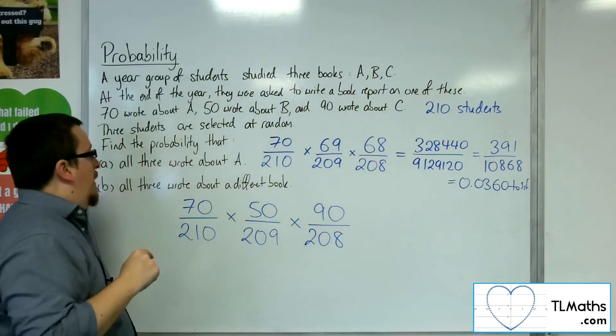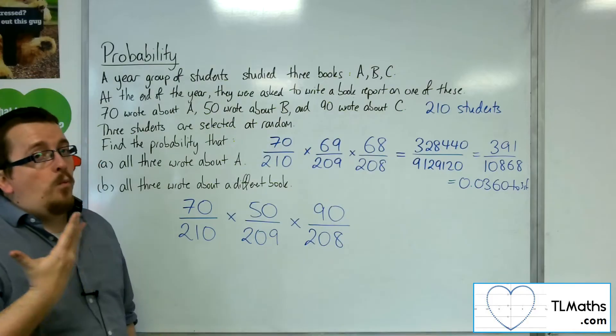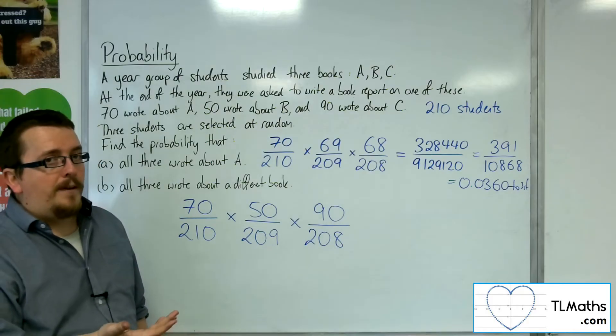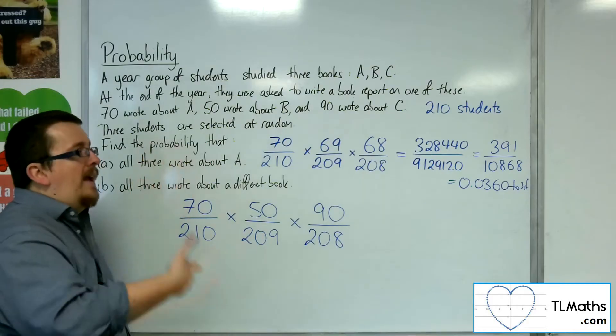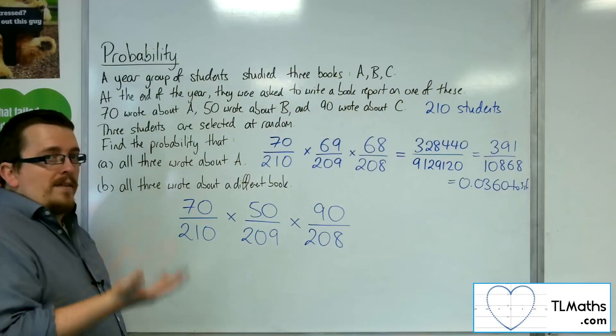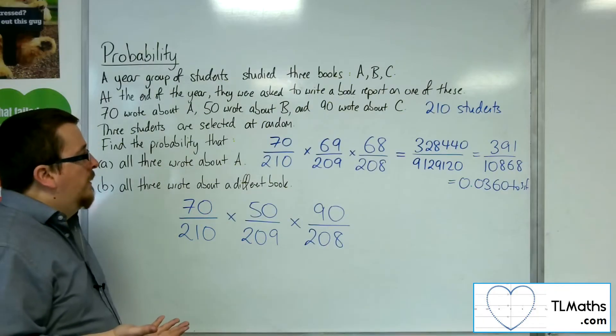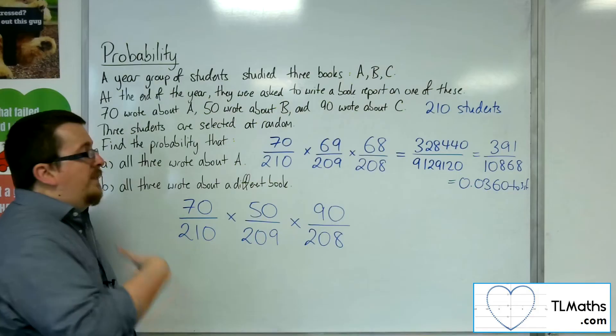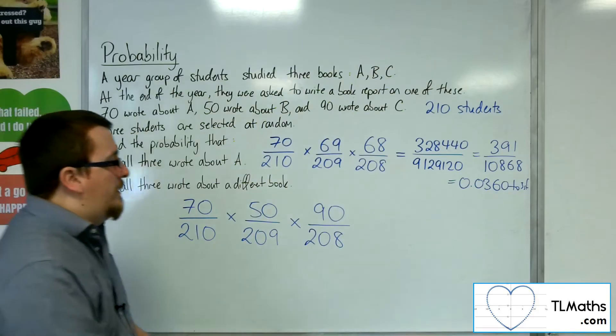For the first problem, all three wrote about A, there was only one way that it could happen: A, then A, then A. However, for this, there is the order to consider.